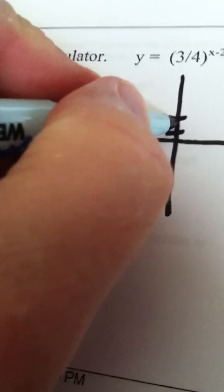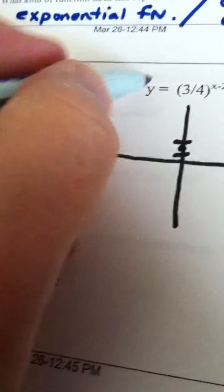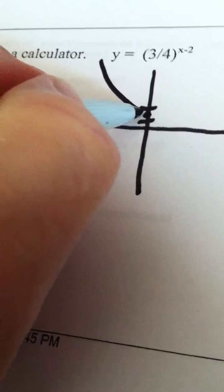So, when I'm drawing my graph, here's 1, here's 2. My y-intercept is a little shy of 2. The graph is coming in like this, and here it's asymptotic.